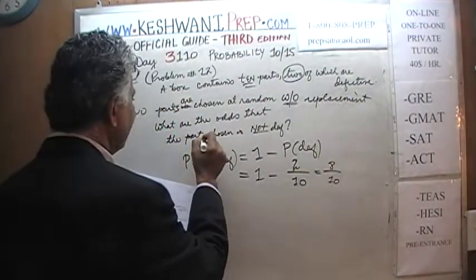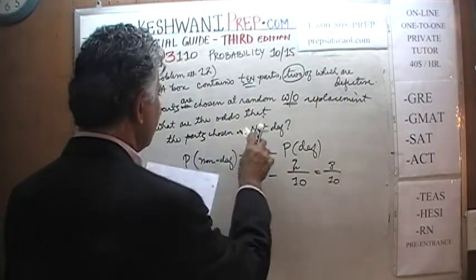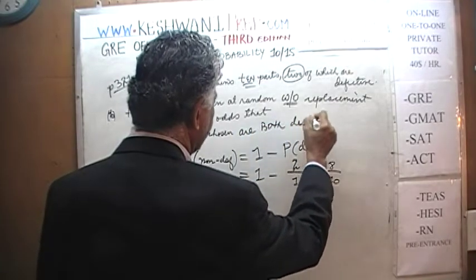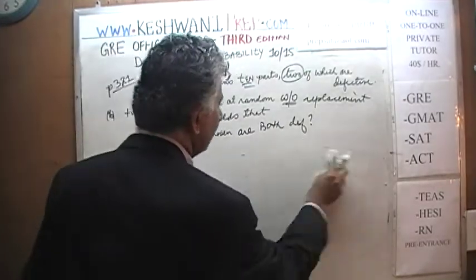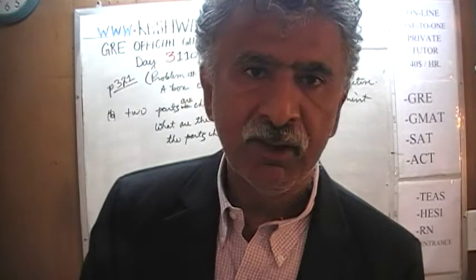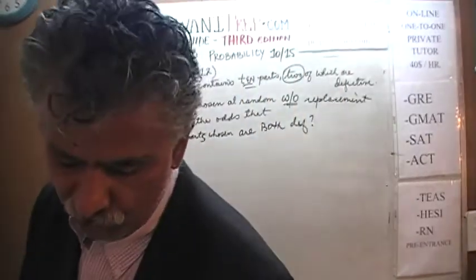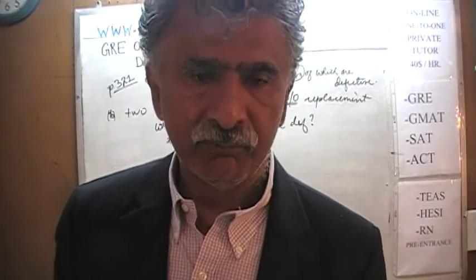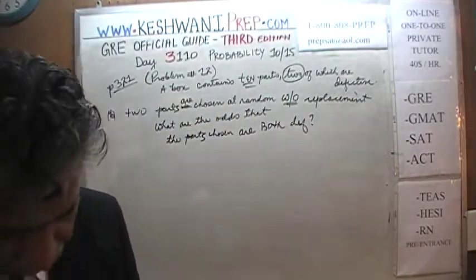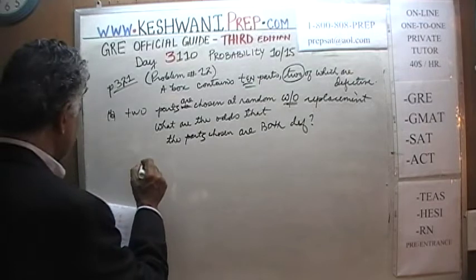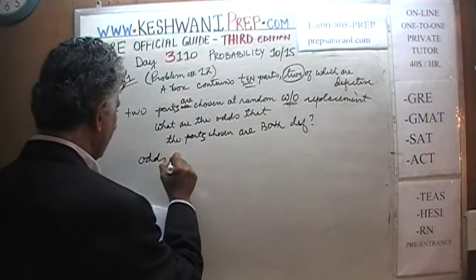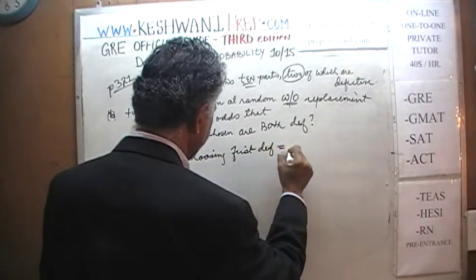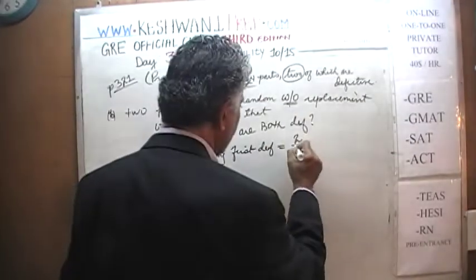What are the odds that both parts chosen are defective? We are choosing two parts out of 10, knowing that two of them are defective. What are the odds that if I choose two parts at random, one after the other, without replacement, both end up being defective? The odds of choosing the first defective part: there are two defective parts out of 10, so that is very simple.